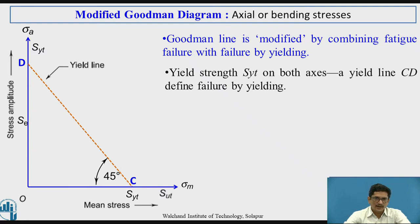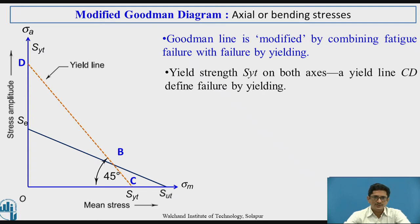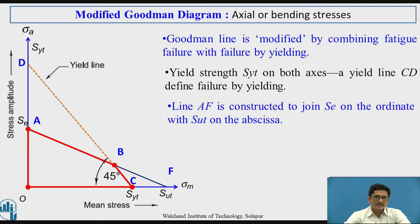Next, SUT is plotted on the x-axis, and the endurance limit SE is put on the y-axis. I join SE to SUT. At the intersection of this line with the yield line CD, I can get point B. Point A is marked at SE on the y-axis, and point F is the intersection at SUT on the x-axis. Joining these, the line AF is constructed.